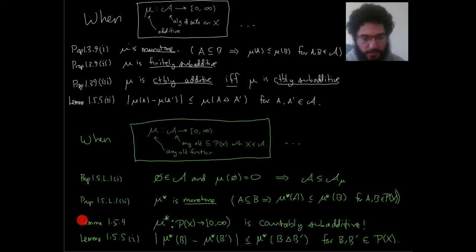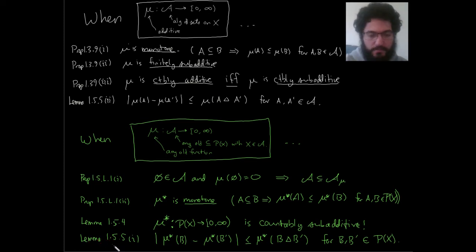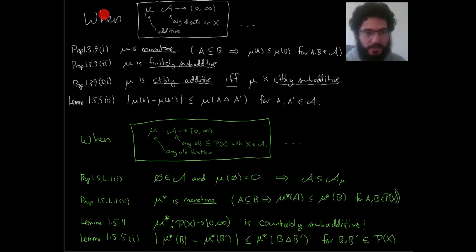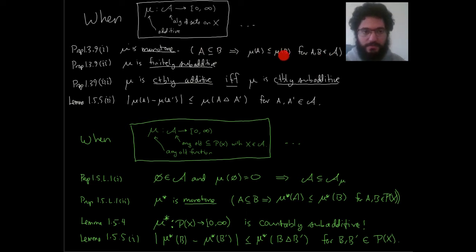We also proved in the previous lecture that mu star is countably sub-additive — with emphasis on sub. It really is amazing that you can start with such garbage and define something with such a nice property. And Lemma 155, which we just finished proving, gives this key inequality. In the white setting — good starting data, algebra of sets, non-negative additive function — mu is also monotone: if A ⊆ B then mu(A) ≤ mu(B) for all A, B in the algebra.